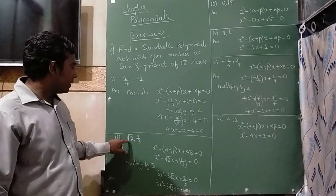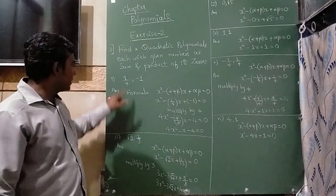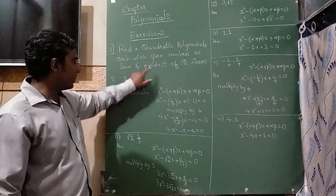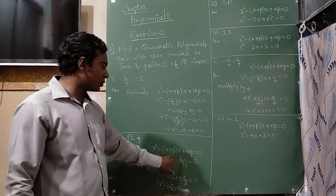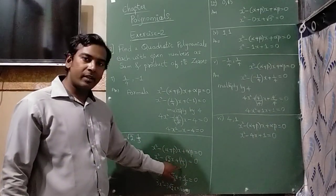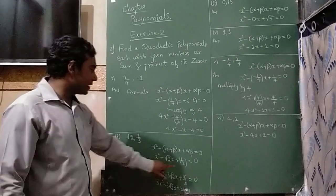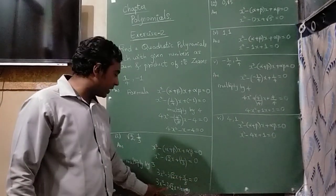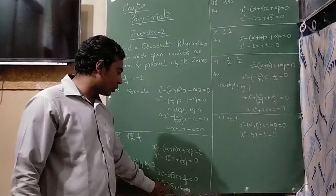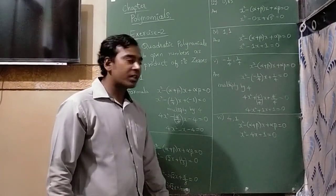In the second question, √2 is your sum, 1/3 is the product. If I substitute in this formula, I will get x² - √2x + 1/3 = 0. Here in the denominator you can see there is a number 3, so I will multiply by 3. The whole expression will become 3x² - 3√2x + 1 = 0.